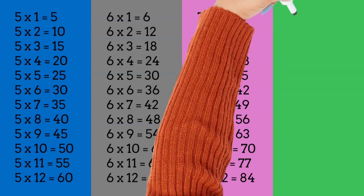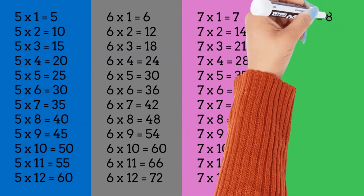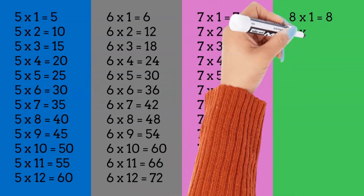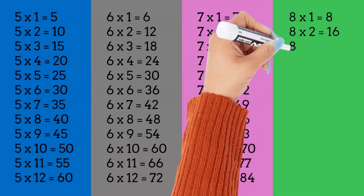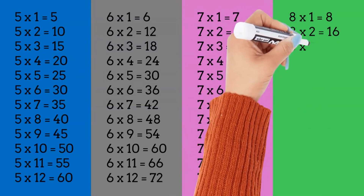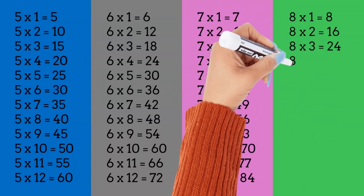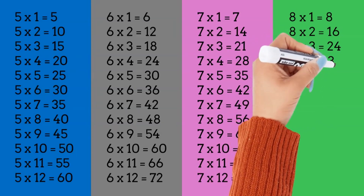Last one — times table 8. 8 times 1 is equal to 8. 8 times 2 is equal to 16. 8 times 3 is equal to 24. 8 times 4 is equal to 32.